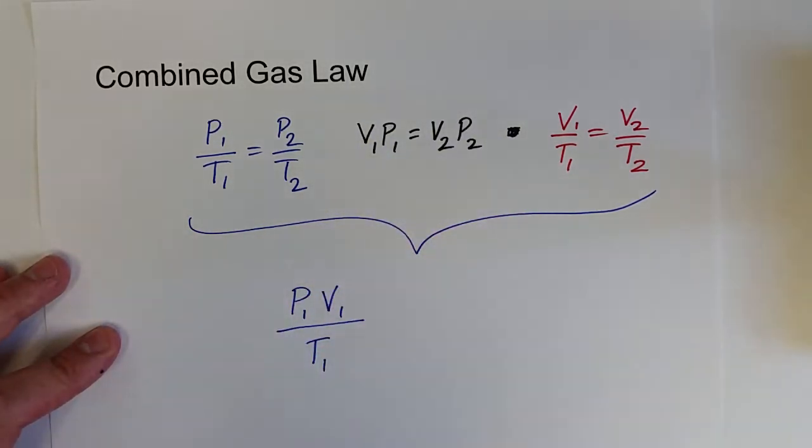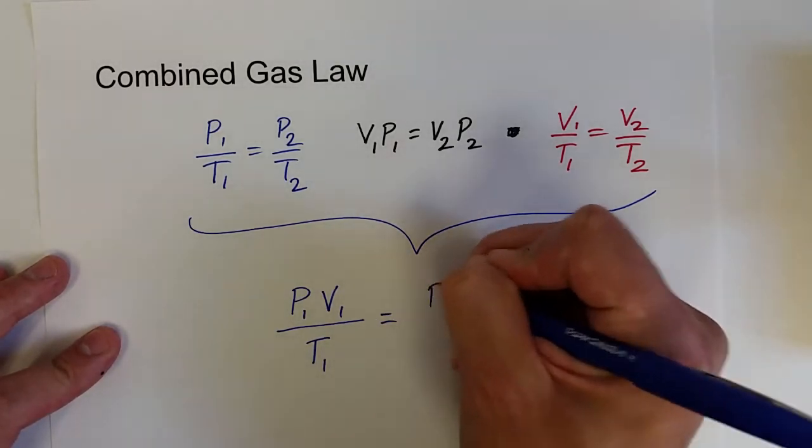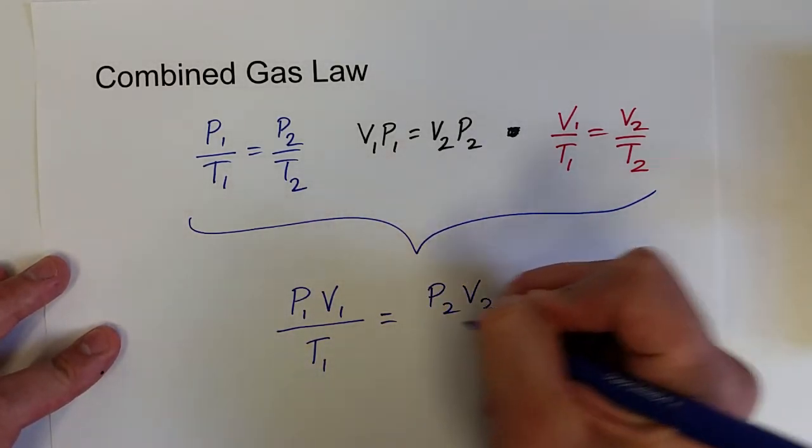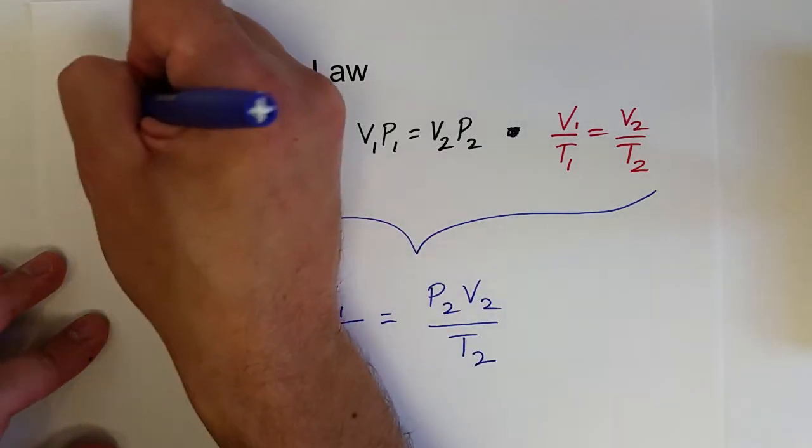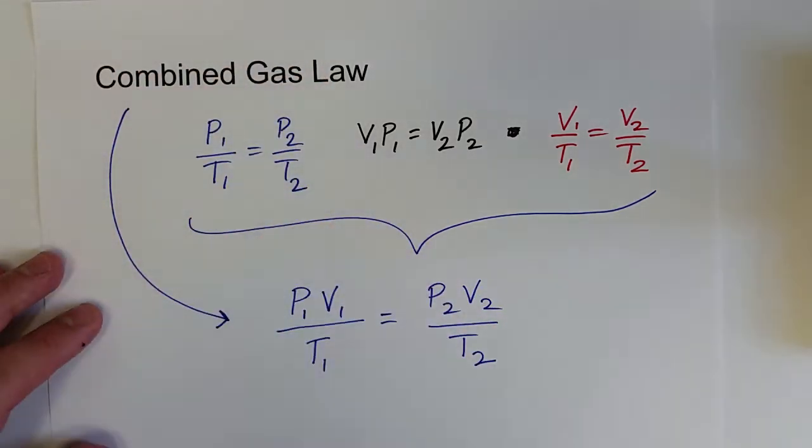So we can do P1 V1 over T1 equals P2 V2 over T2. That's known as the combined gas law.